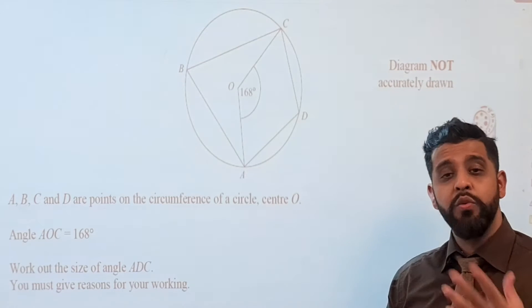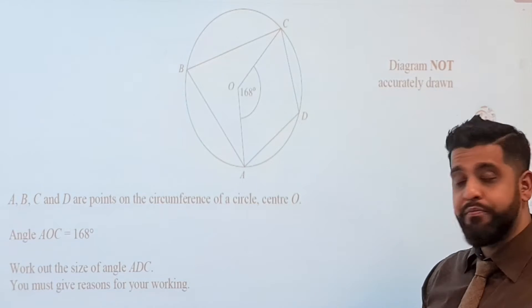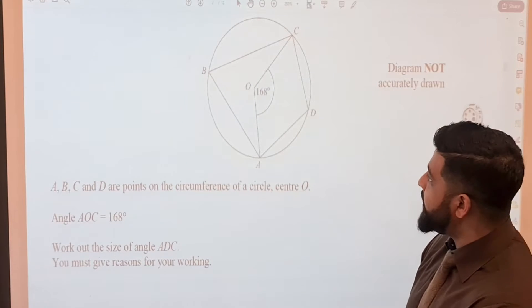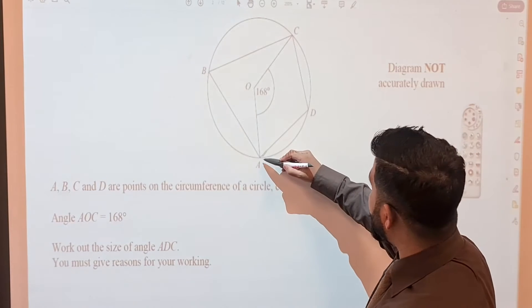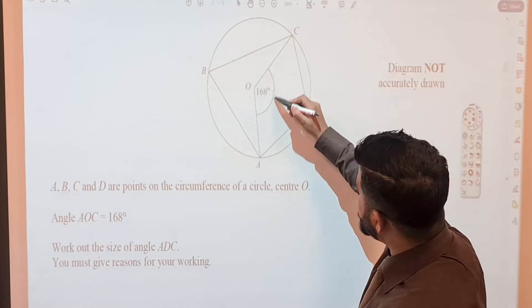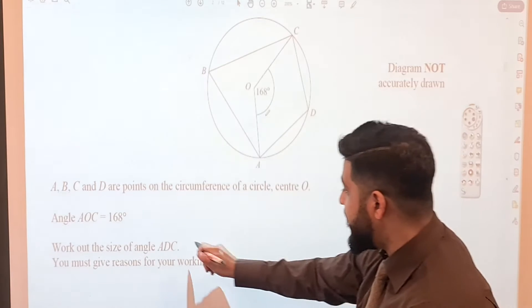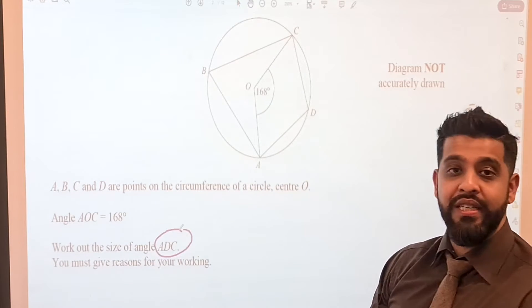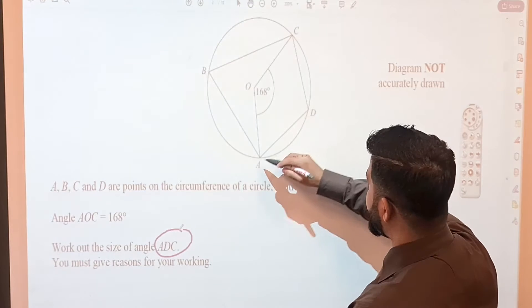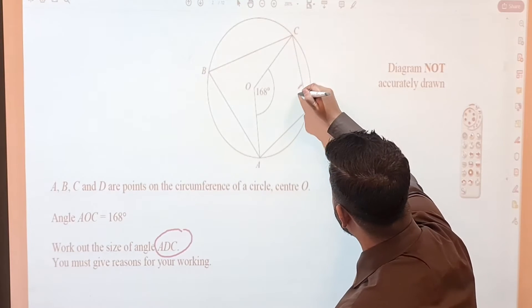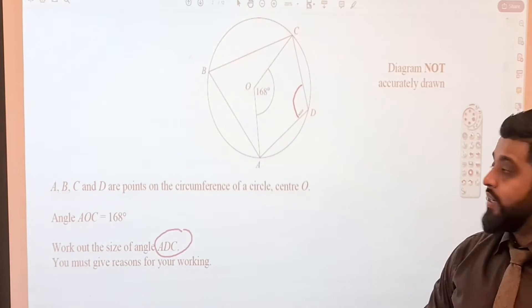Let's have a look at the next question here. Maybe pause the video, try to figure it out yourself and press play again when you're ready to go through it. Alright, so what do we have here? We are told that angle AOC here is 168 degrees and we have to find angle ADC. So let's highlight ADC. We need to find this angle right here.